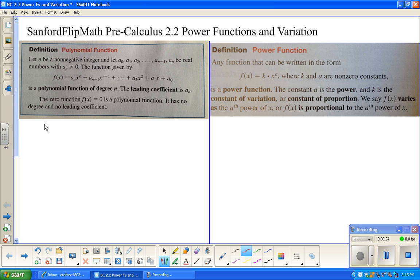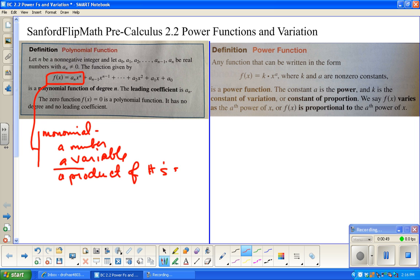I have this one for a polynomial function up here just to remind you specifically about a monomial. Remember a monomial - Sanford's definition is it's either a number, a variable, or a product of numbers and or variables. So basically it comes out to be anything that you can write in this form where we're talking about x to the n and n has to be an integer, a whole number, greater than or equal to zero.